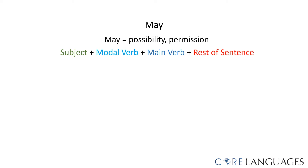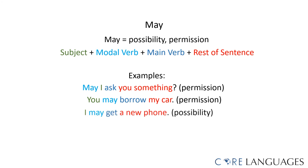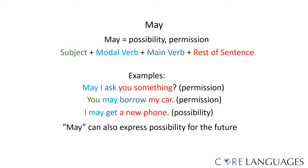The modal verb May is used to express the possibility or the permission to do something. The word order is the same. For example, 'May I ask you something?' or 'You may borrow my car' — both sentences express the permission to do something. 'I may get a new phone' — this sentence expresses the possibility of getting a new phone. May can also be used to express the possibility for something to happen in the future. For example, 'I may get a new phone next Thursday.'